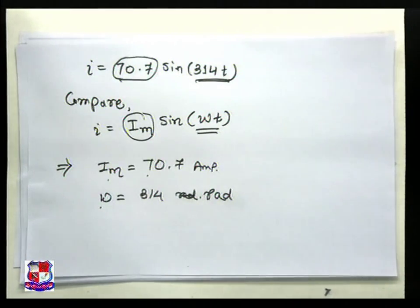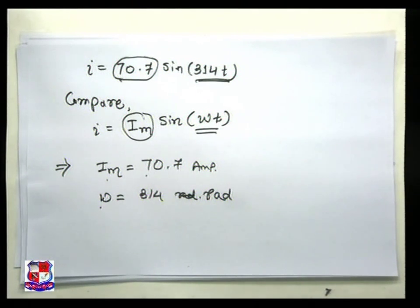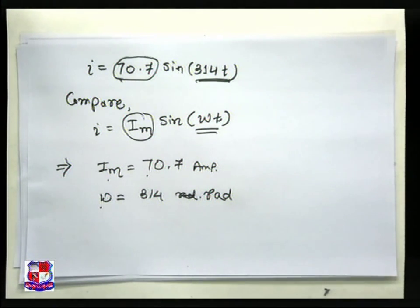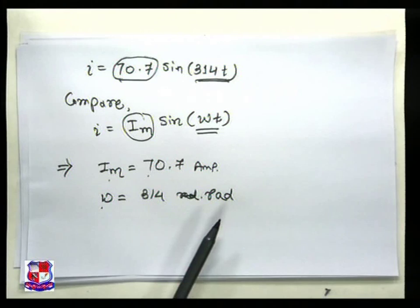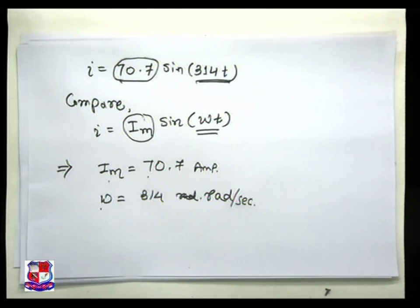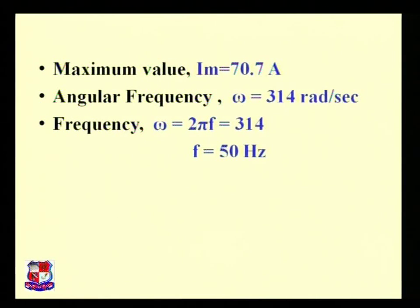By comparing we can get all the answers. Angular frequency ω equals 314 radians per second. To find frequency, we use the relation ω = 2πf. Substituting 314 = 2πf and dividing by 2π, we get frequency equal to 50 hertz.